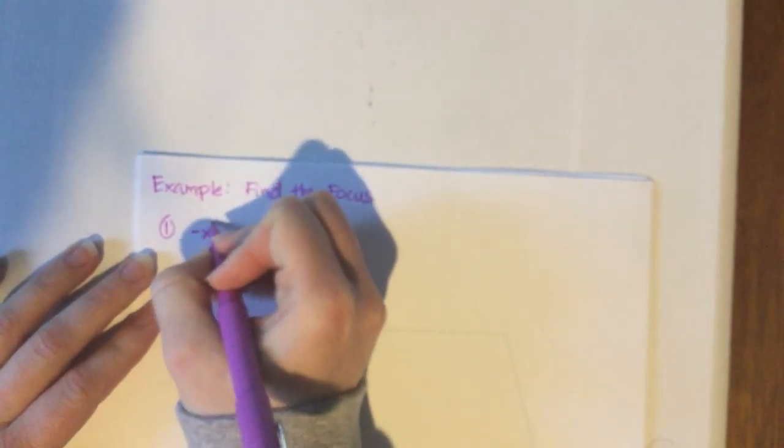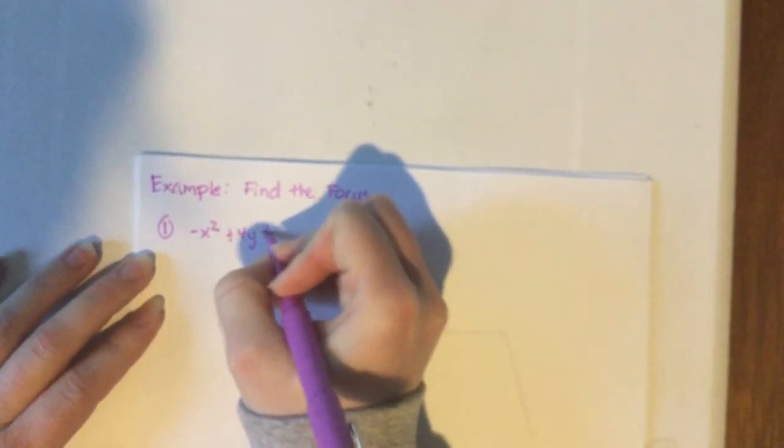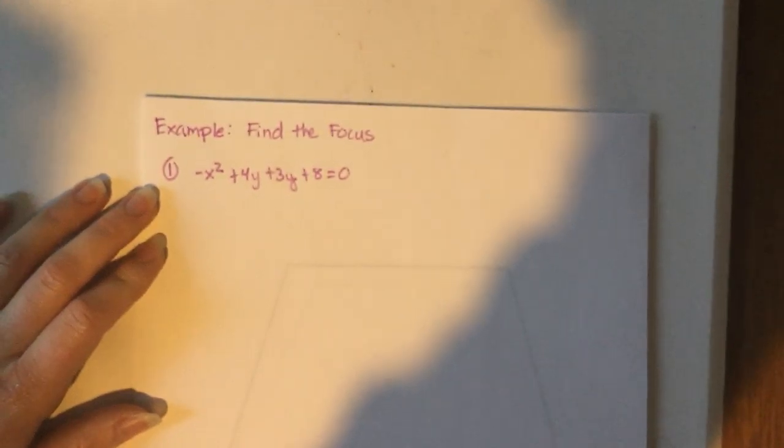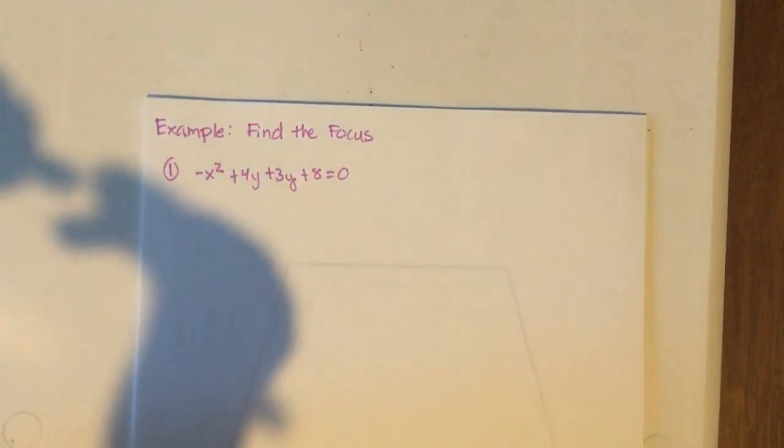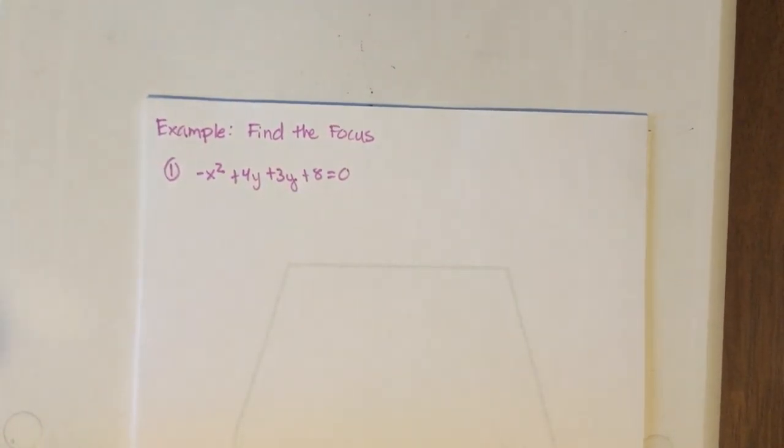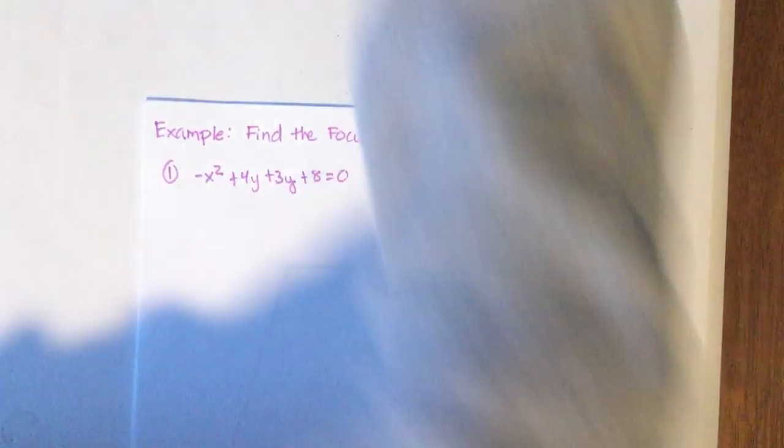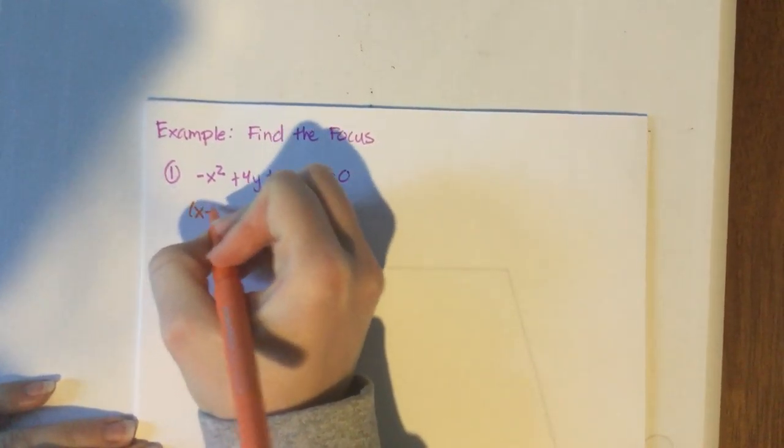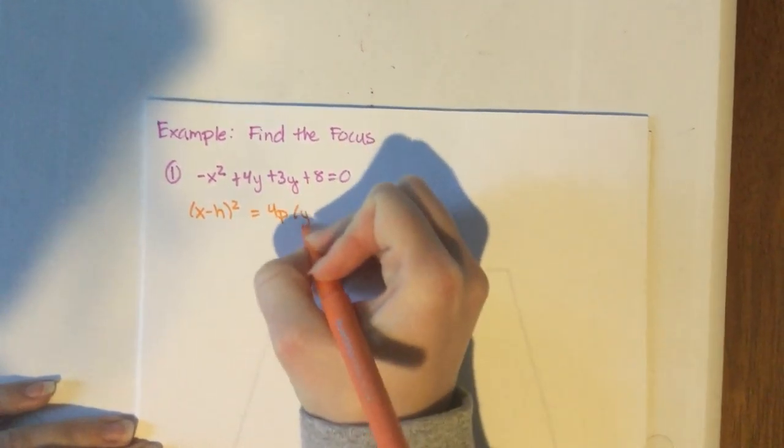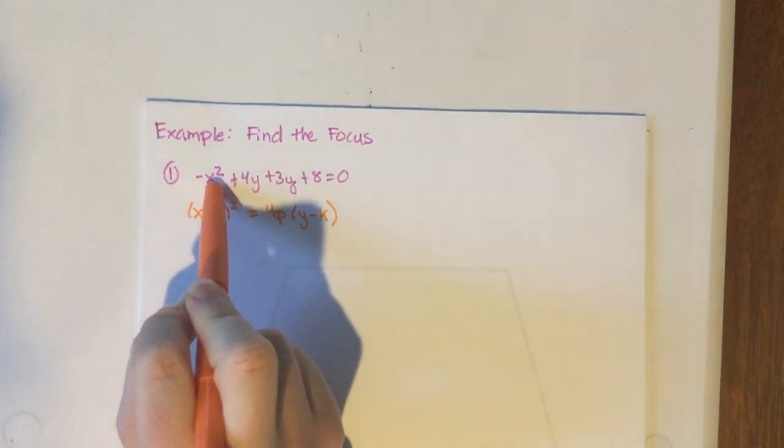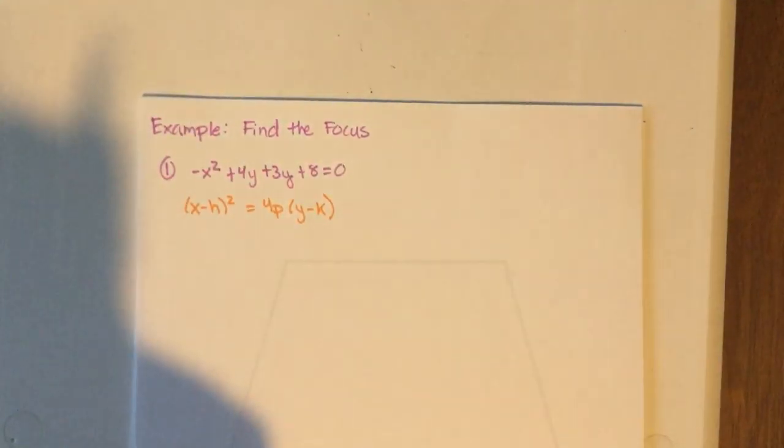So what you have is negative x squared plus 4x plus 3y plus 8 equals 0. Okay, so the key thing you always want to look for is look for the squared terms. Squared terms are going to help you tell what kind of problem this is. So I see I have an x squared, I don't have a y squared, which means I want to be in that form that is (x - h)² = 4p(y - k). However, right now I notice that my x squared is negative.